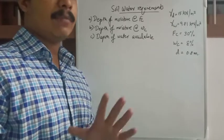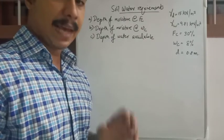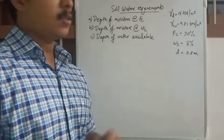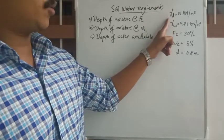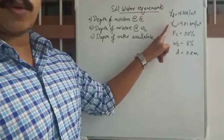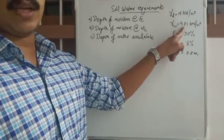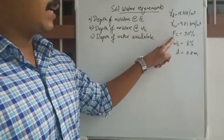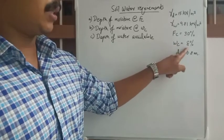Welcome back. Today we are doing a numerical problem on the topic of soil water requirements. The given data are: dry unit weight of soil is 15 kN/m³, unit weight of water γw is 9.81 kN/m³ as we use in most problems, field capacity is 30%, and permanent wilting point is 8%.